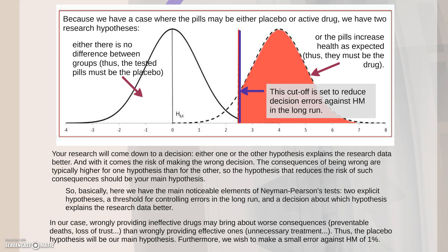In our case, wrongly providing ineffective drugs might bring about worse consequences, for example preventable deaths, loss of trust, etc., than wrongly providing effective ones, for example unnecessary treatment. Thus, the placebo hypothesis will be our main hypothesis. Furthermore, we wish to make a small error against the main hypothesis of 1%.